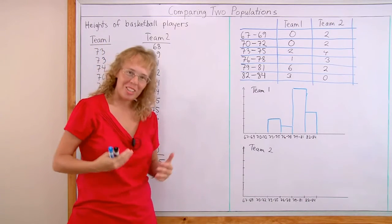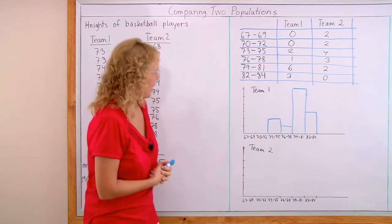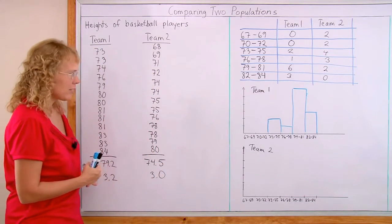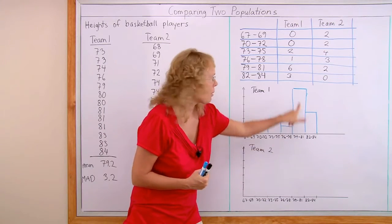We can see that there are a lot of tall players in team 1. You see here's the peak. And also the mean, it was 79. The mean is in this bin, 79 to 81.